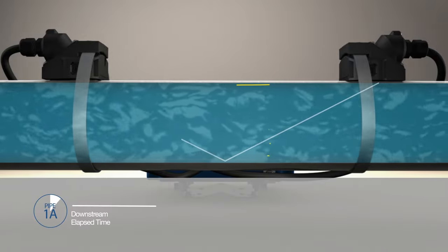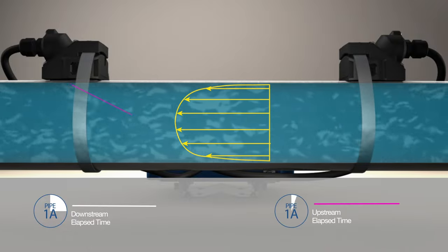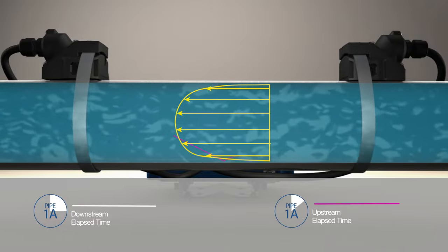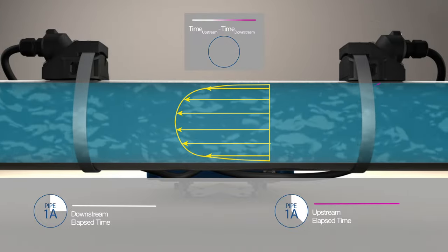The signal measures the average velocity across the flow profile rather than a single point, resulting in a more accurate reading. The difference between the upstream and downstream travel speeds are used to calculate fluid velocity.